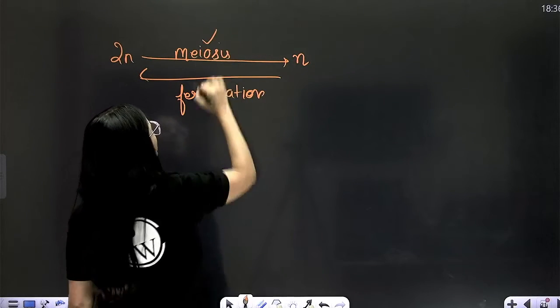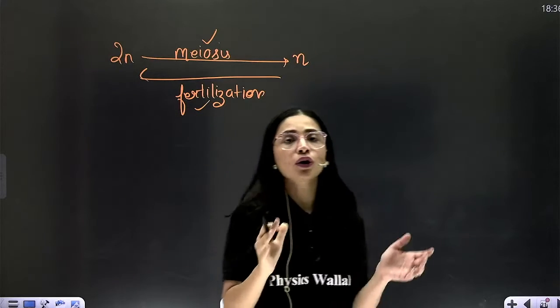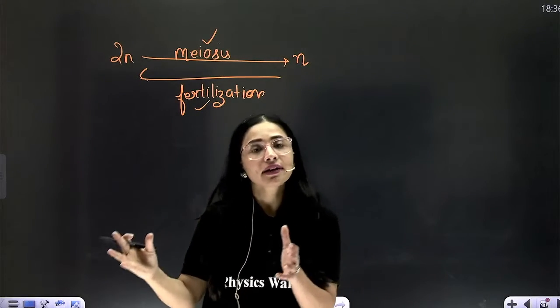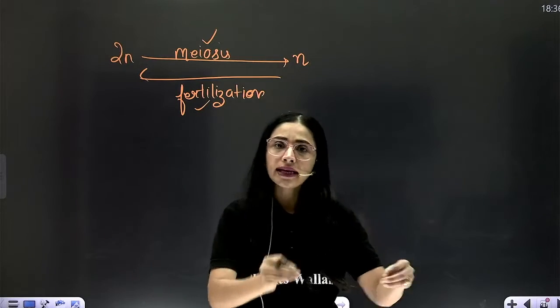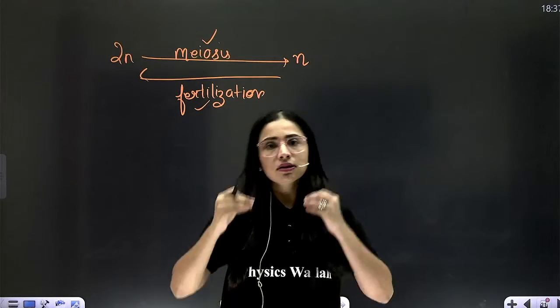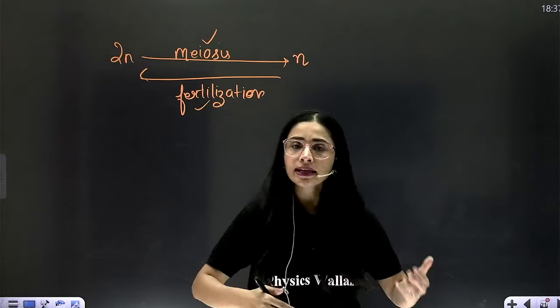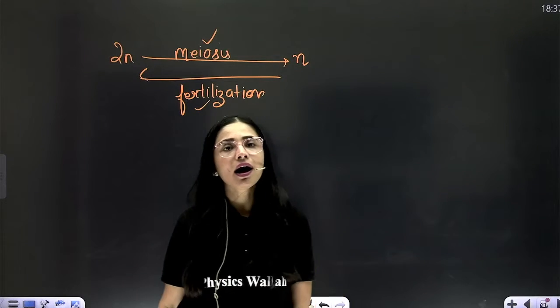So there are two important steps for alternation of generation. That means switch from 2N to N, N to 2N. Meiosis, fertilization. It keeps on taking place and generations are produced.